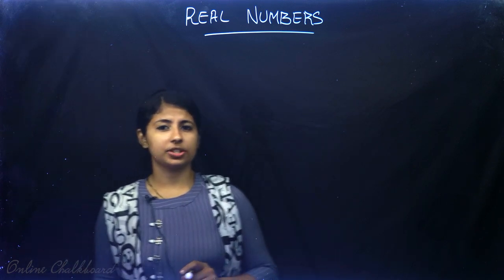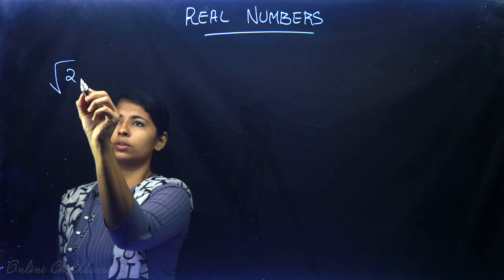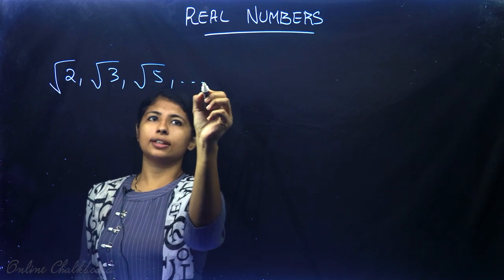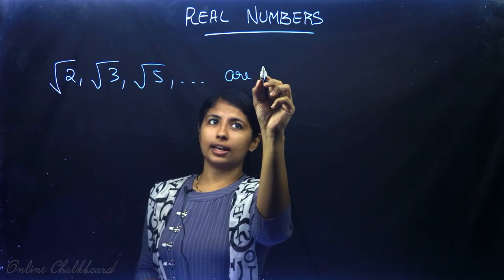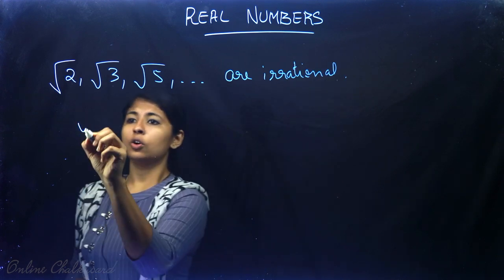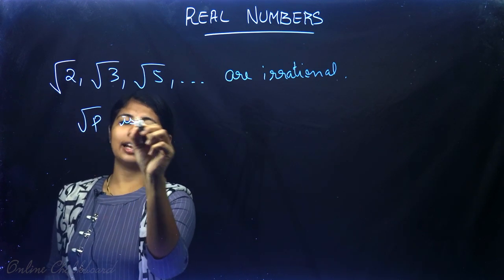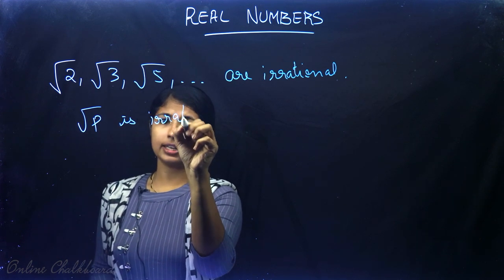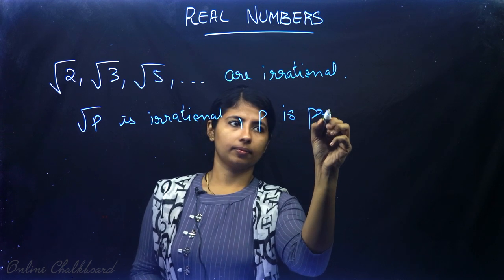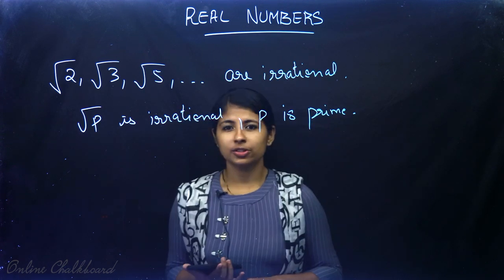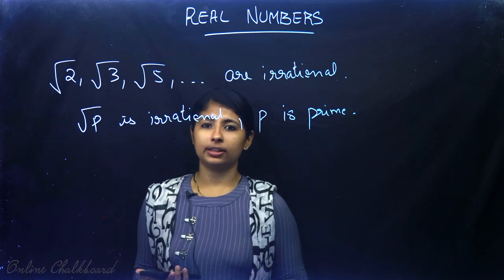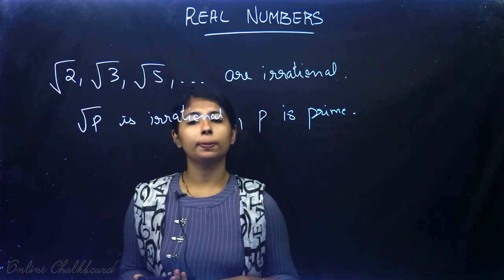In this section we learn to prove that √2, √3, √5, etc. are irrational. In general, we can say that √p is irrational where p is a prime number. We will be using the fundamental theorem of arithmetic to prove that √p is irrational.